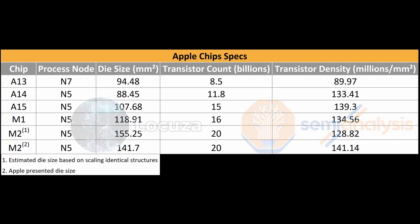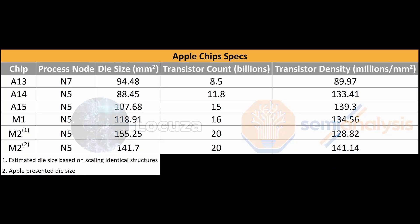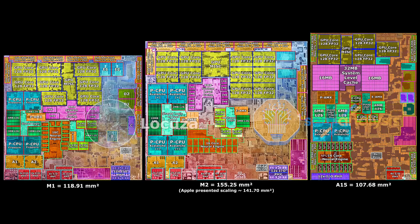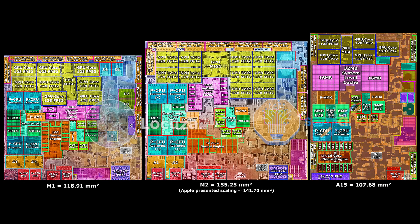We've heard the A16 will not utilize the next generation ARMv9 based core, which is quite sad if true given Apple was the first to implement ARMv8. We heard that this next generation ARMv9 core will only come in the M3, which will be Apple's first product on the TSMC N3 node, 3 nanometer. Apple has already designed and taped out the M2 Pro and M2 Max, which are still on N5, second generation N5. So let's dive into the die shot.